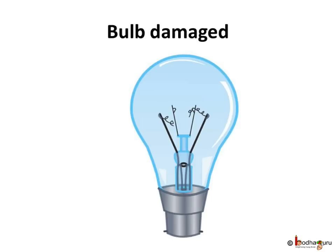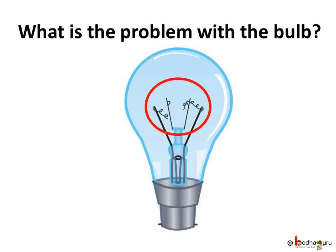There is no electricity for a long time. After electricity is back, we may find that the bulb is not glowing. What happened? How did the bulb get damaged? Let us do some investigation to get to the root of it.